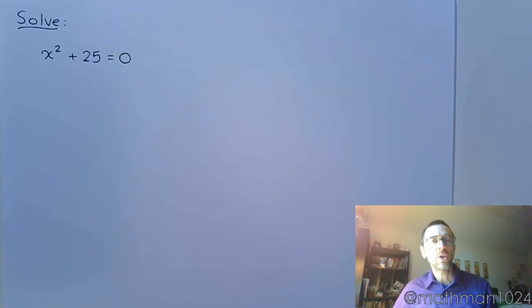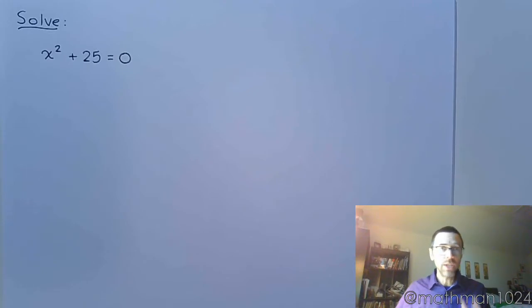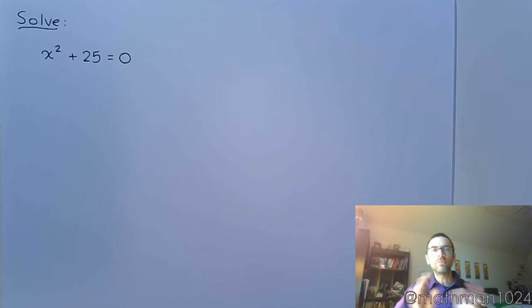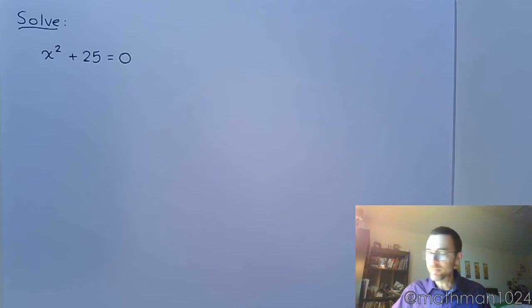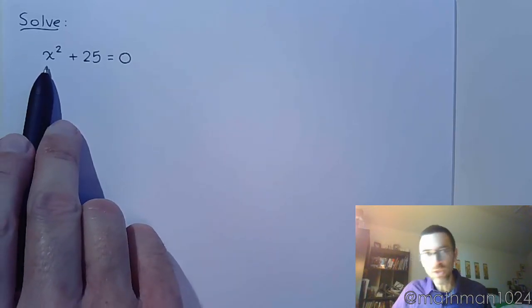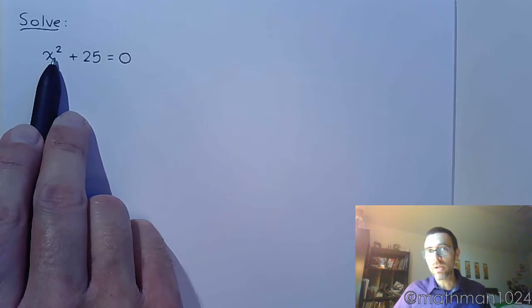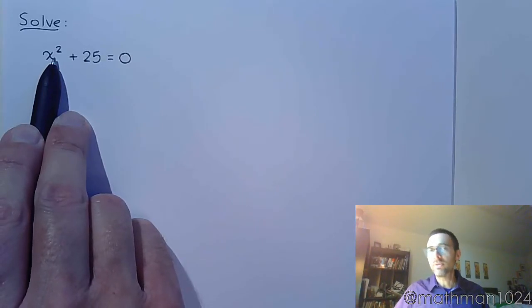We're talking about how to use the square root property. Before you can use it, there are a couple things to check. Number one, in your quadratic equation you have to make sure you only have one instance of the variable. If you see X in multiple spots, odds are you're not going to be using the square root property. Here, this is the only term that contains X, and it is a square — so this is a prime candidate.